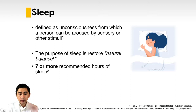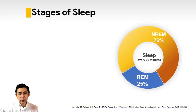According to the American Academy of Sleep Medicine, an average adult will need seven or more recommended hours of sleep. Lesser than that, the adult will already have sleep deprivation.